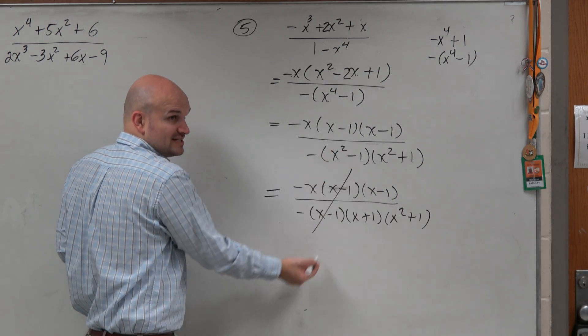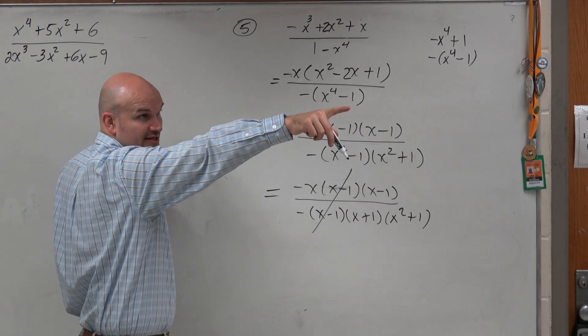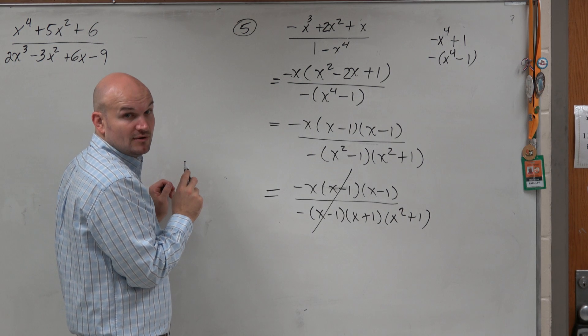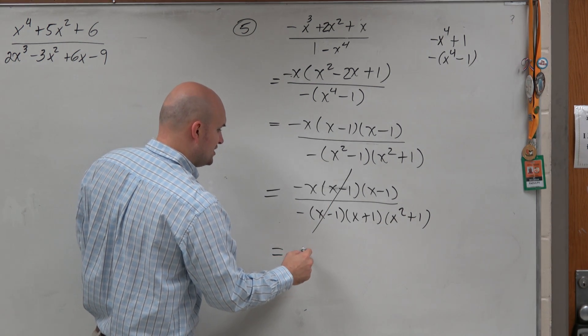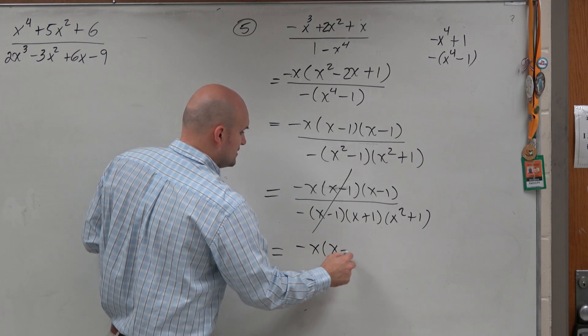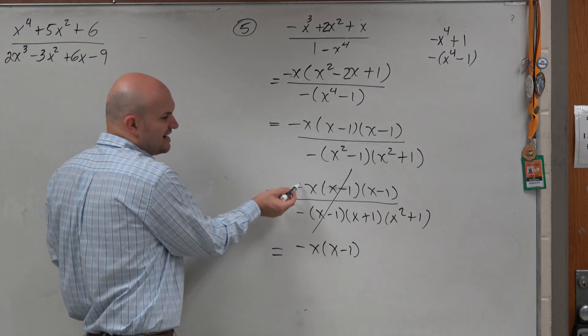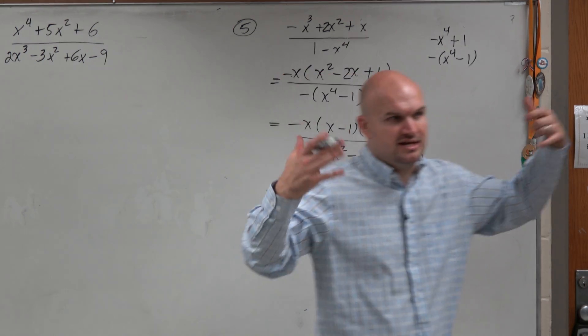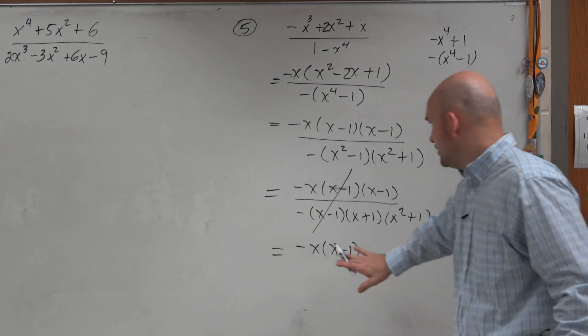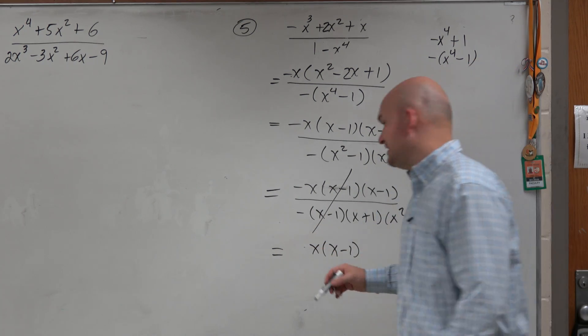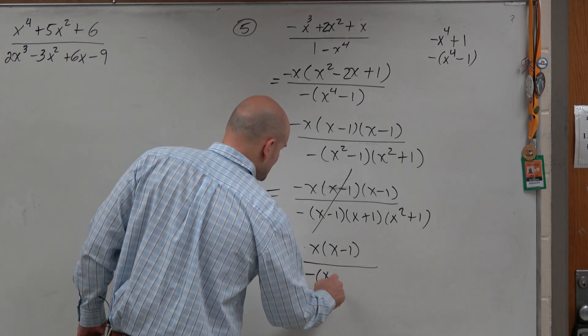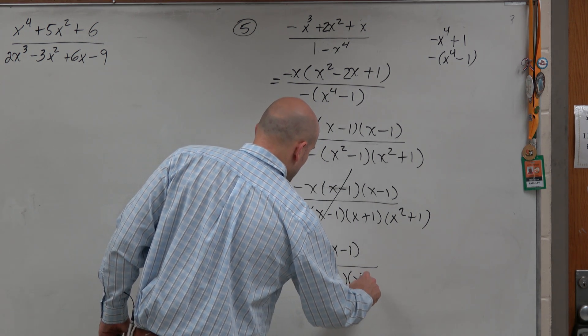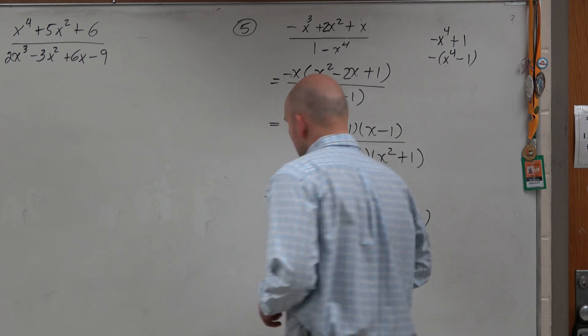Now these divide out, because any term or number or expression divided by itself is equal to 1. So my simplified final result is just going to be negative x times x minus 1. Now again, guys, what's a negative divided by negative is just a positive. So I don't really need to worry about having the negatives there. And I'm just going to be left with negative times x plus 1 times x squared plus 1.